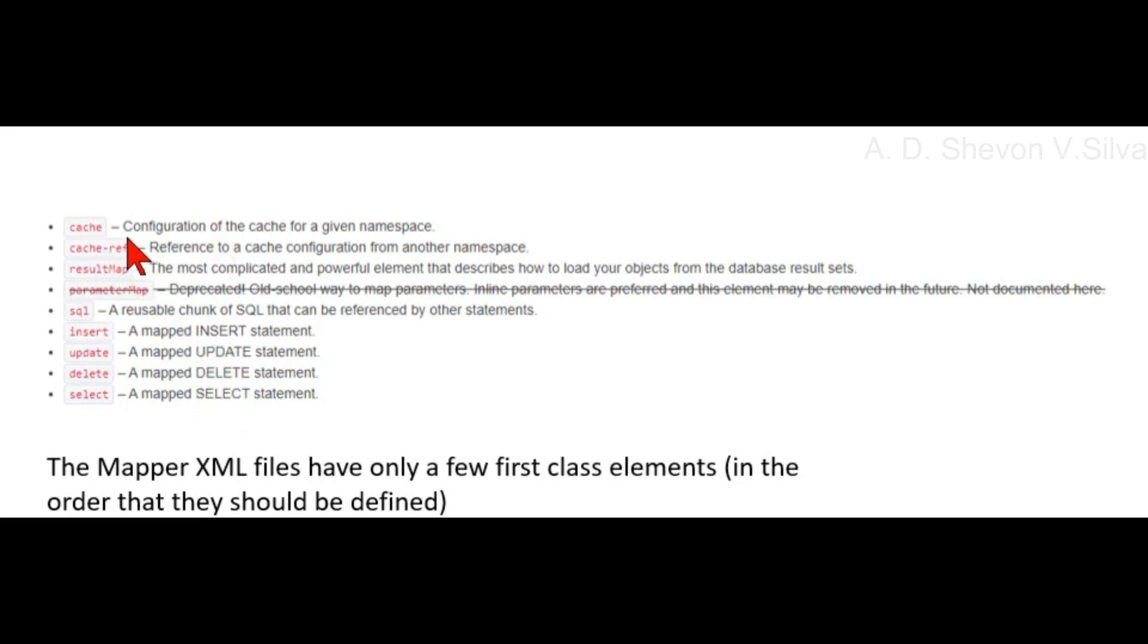Cache: configuration of the cache for a given namespace. Cache-ref: reference to a cache configuration from another namespace. Result map: the most complicated and powerful element that describes how to load your object from the database result set.